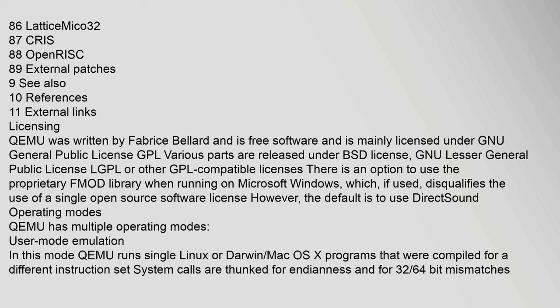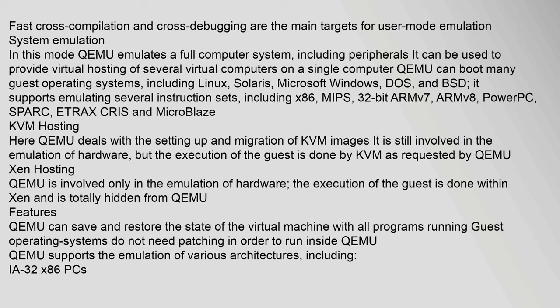QEMU has multiple operating modes. In user mode emulation, QEMU runs single Linux or Darwin (Mac OS X) programs that were compiled for a different instruction set. System calls are thunked for endianness and for 32/64-bit mismatches. Fast cross-compilation and cross-debugging are the main targets for user mode emulation. In system emulation mode, QEMU emulates a full computer system including peripherals, and can be used to provide virtual hosting of several virtual computers on a single computer.